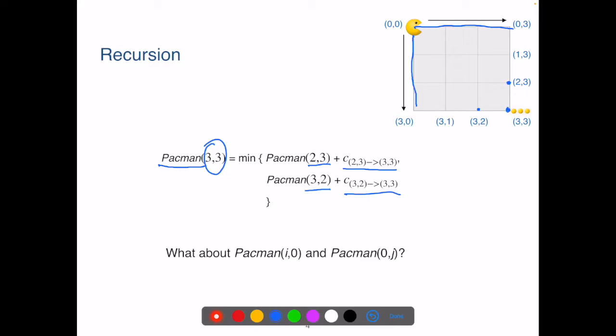For instance, for Pac-Man to get to point (0,j), it can only get there from the point (0,j-1). Similarly, for Pac-Man to get to the point (i,0), there is only one option. That's from the point (i-1,0).